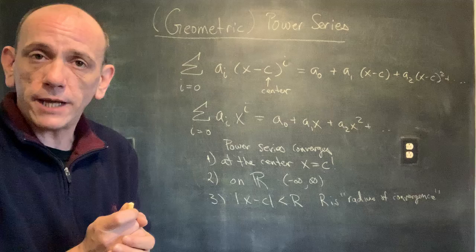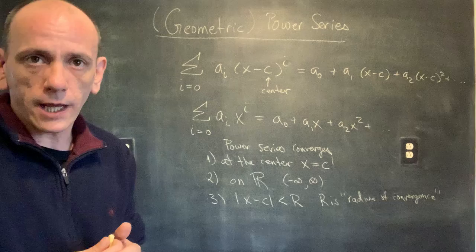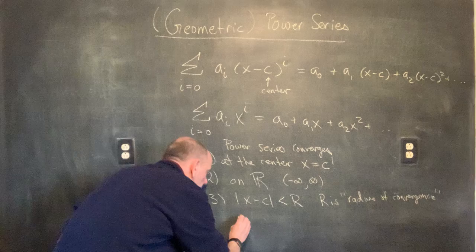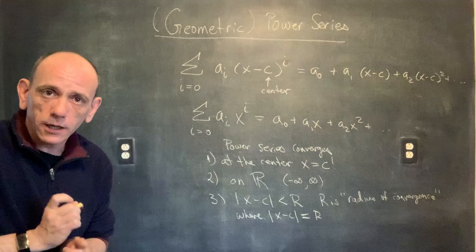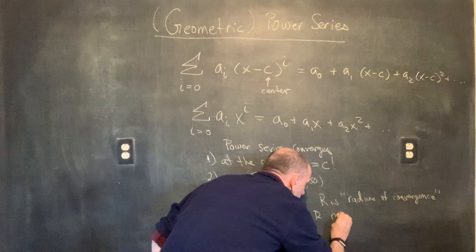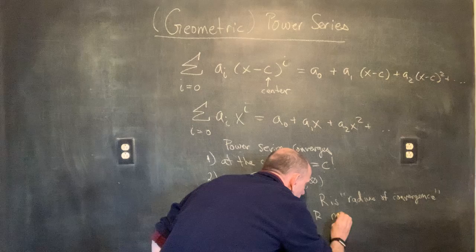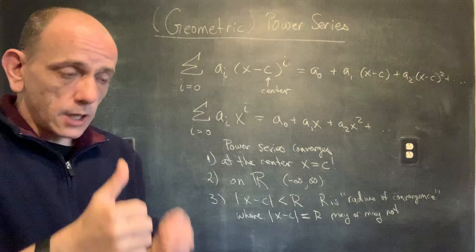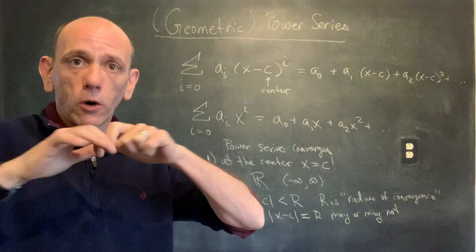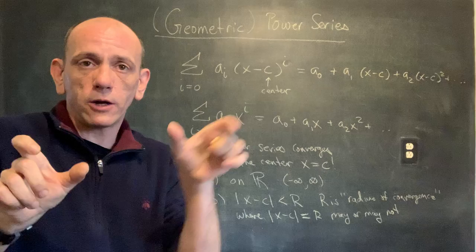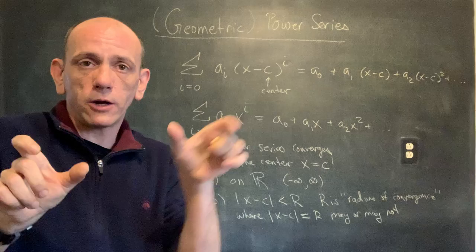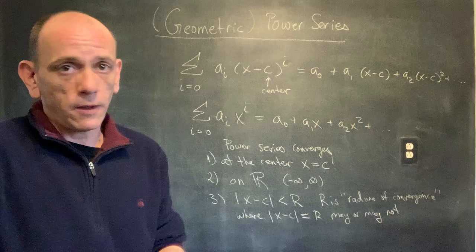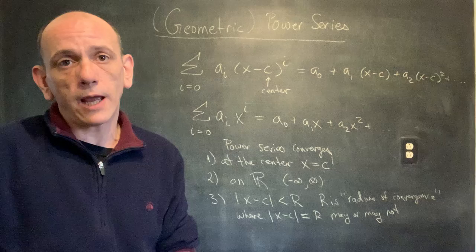At the endpoints, where the absolute value of (x minus c) equals r, the series may or may not converge — we always have to check the endpoints. Usually those just fall back to basic tests like the divergence test or alternating series test. Those are the only possibilities: it converges at the center, on some interval, and we check the endpoints. There are no weird disjoint intervals to worry about.